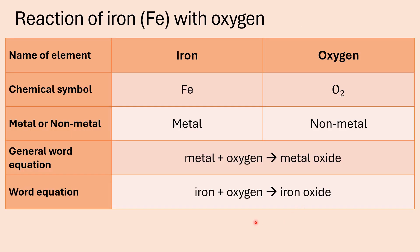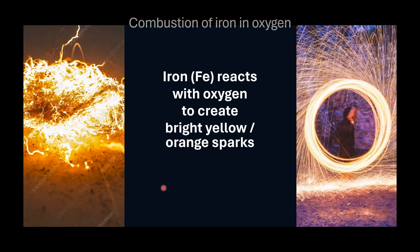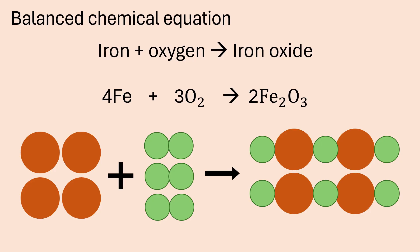Now let's look at the reaction of iron with oxygen. Iron is Fe, and oxygen is O2. Iron is the metal; oxygen is a non-metal. The general word equation is: when a metal reacts with oxygen, it forms a metal oxide — in this case, iron plus oxygen forms iron oxide. You can take a piece of steel wool and burn it in air. When iron or steel wool burns in oxygen, you won't really see a flame, but you will see the steel wool glowing with a bright yellow or orange glow. If you attach that piece of steel wool to a piece of string and swing it through the air, it will create bright yellow sparks. This is the combustion — the quick reaction — of iron with oxygen.